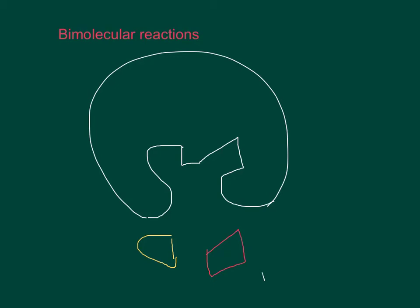Up to now we've only talked about unimolecular enzyme reactions, which are actually fairly rare as far as enzymes are concerned. What I want to look at right now is bimolecular enzyme reactions. This enzyme will only form a product whenever we have both of our substrates — substrate A and substrate B — whenever both substrates are bound to the enzyme. At that point it will make products.